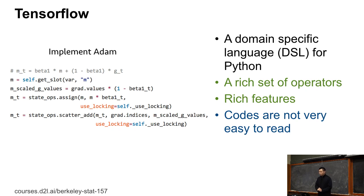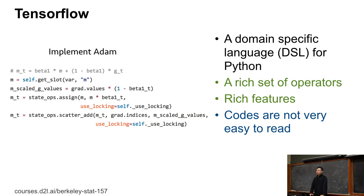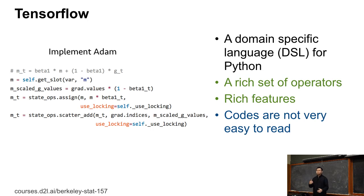TensorFlow is probably the most popular deployment framework right now. It provides a domain-specific language called DSL for Python — so TensorFlow is like Python but not Python. It has thousands of operators, which is an advantage; you have everything you want to use. It also has a lot of features for training, deployment, everything. But TensorFlow's code is a little hard to understand. For example, if you read the code, you might not know what 'state.ops.assign' is — it's actually just an equals operator — but it's hard to follow.